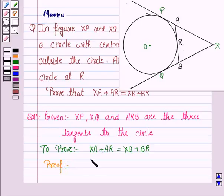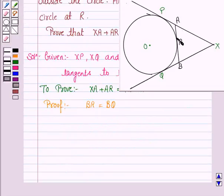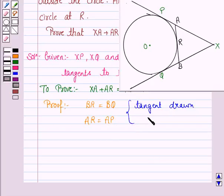Now BR is equal to BQ. Similarly, AR is equal to AP. This is because tangents drawn from an external point are equal.